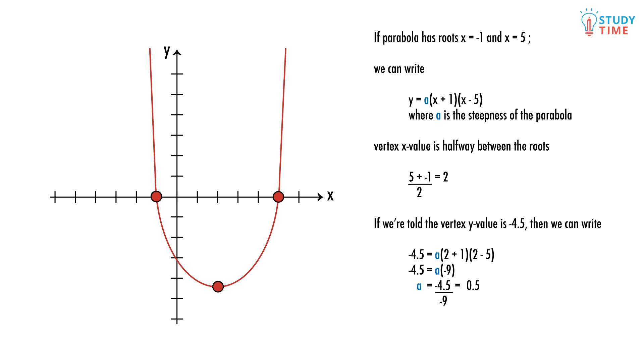Rearranging for a, we find that a equals negative 4.5 divided by negative 9, which means the slope a is 0.5. So our final equation is y equals 0.5 times (x plus 1) times (x minus 5).